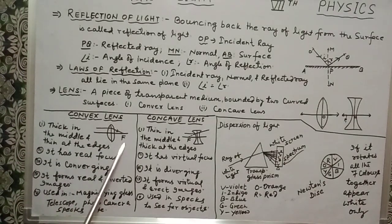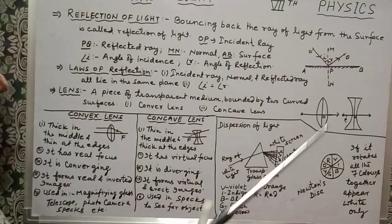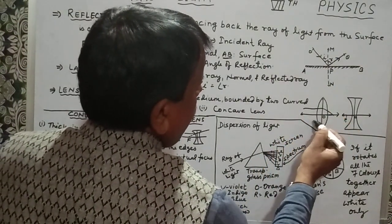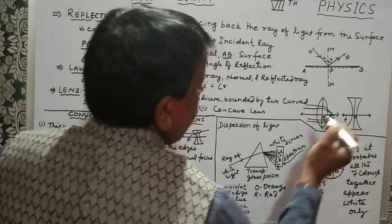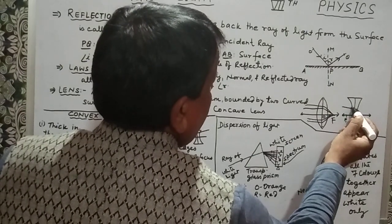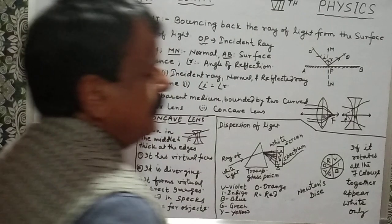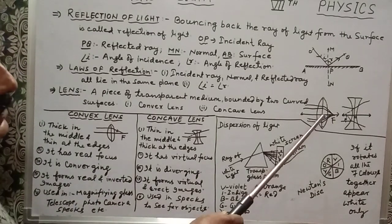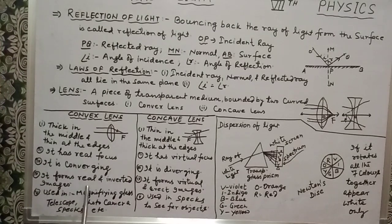The convex lens is thick in the middle and thin at the edges. It has a real focus — light rays come in, refract, and meet at a point, which is called the focus. It is also known as a converging lens. For the concave lens, light rays come in, refract, and when produced back they meet at a focus on the same side — this is a virtual focus. The convex lens forms a real and inverted image.